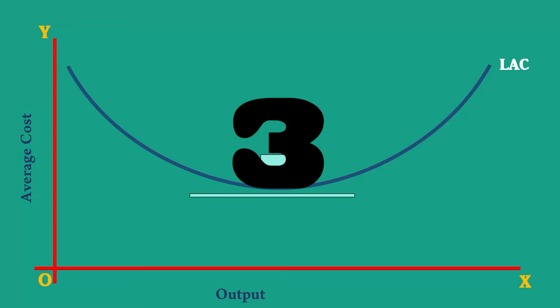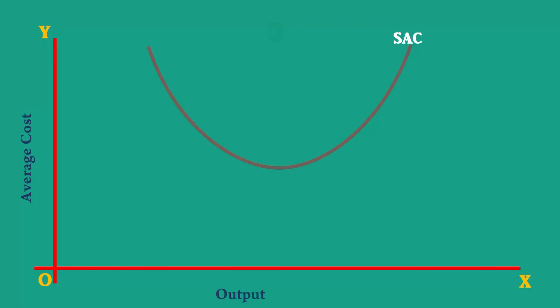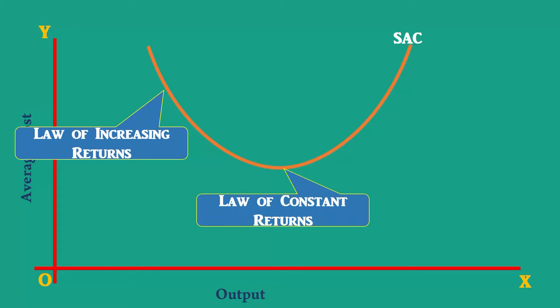Third, the shape of the short run average cost curve is governed by the law of variable proportions. It falls initially because of the operation of the law of increasing returns. At the minimum point, law of constant returns operates. Beyond that, law of decreasing returns makes the short run average cost curve to slope upwards.